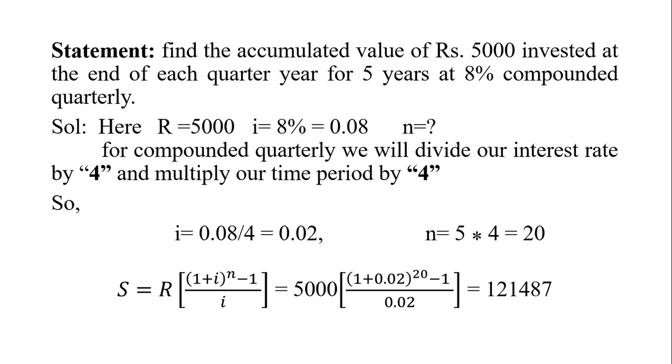So i = 0.08/4 = 0.02, and n = 5 years × 4 = 20, since there are 20 quarters of three months in five years. After substituting the values, the result will be Rs. 121,487. That will be the accumulated value after five years compounded quarterly. That's all from our side, thank you.